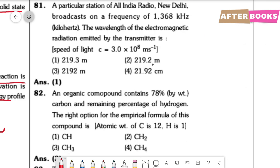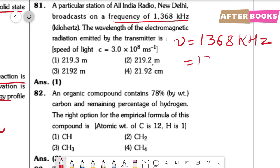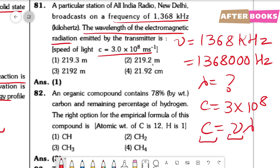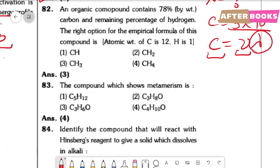Question number 81. A radio station broadcasts at a frequency of 1368 kHz = 1,368,000 Hz. We need the wavelength λ, given speed of light c = 3 × 10⁸ m/s. Using c = νλ: λ = c/ν = (3 × 10⁸) / 1,368,000 ≈ 219.3 m. That is option 1.